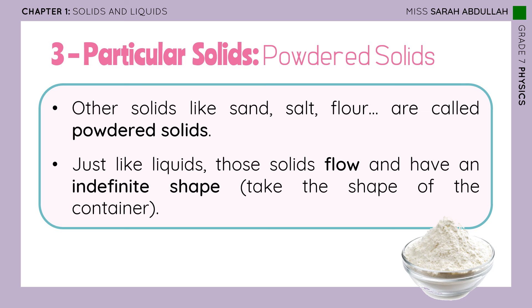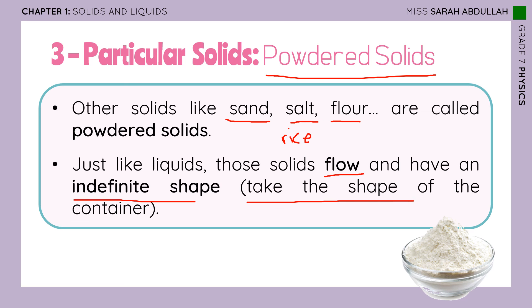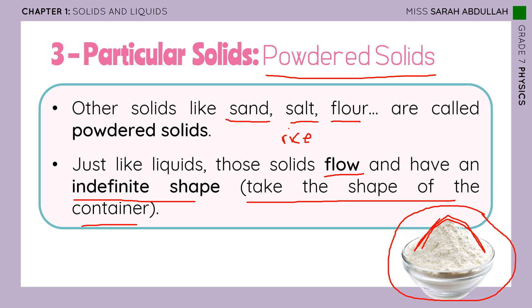Now, powdered solids. Some examples of powdered solids are sand, salt, flour, and rice — anything made up of small grains. They are called powdered solids, and their properties are really close to those of liquids, because these solids flow and they have an indefinite shape — they take the shape of the container. As you can see from this picture, these solids actually pile up, making a little slope. In the next lecture, we're going to see how that differs from a property that liquids have.